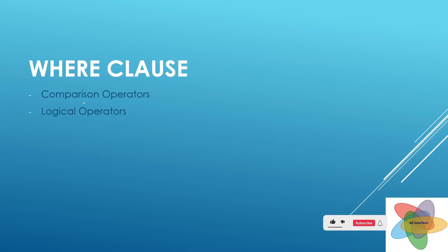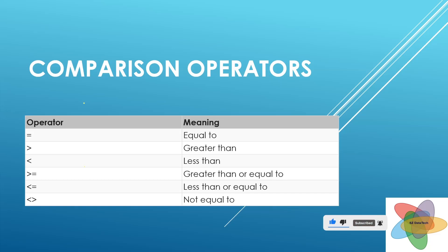Let's go one by one. In comparison operators we have these operators: equal to, greater than, less than, greater than equal to, less than equal to, and not equal to. We can also use not equal to like this way. Some database systems support this.